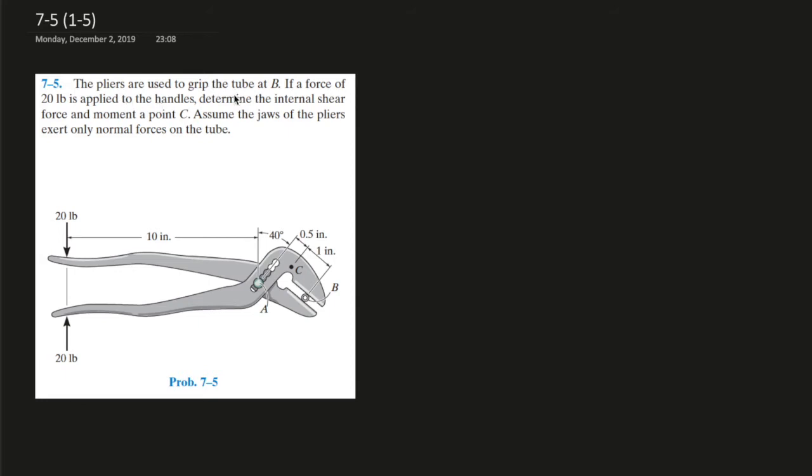It says that pliers are used to grip the tubes at B. If a force of 20 pounds is applied to the handles, determine the internal shear force and the moment at point C. Assume the jaws of the pliers exert only normal forces on the tube. So first let's draw a quick simplified free body diagram.